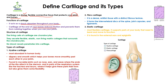The cartilage at the end of your bones reduces friction and prevents them from rubbing together when you use your joints. For example, the cartilage present between the bones of your knees is going to help in reducing friction when you are walking.